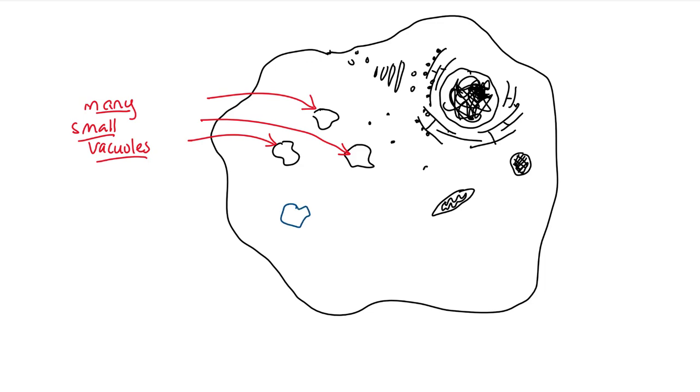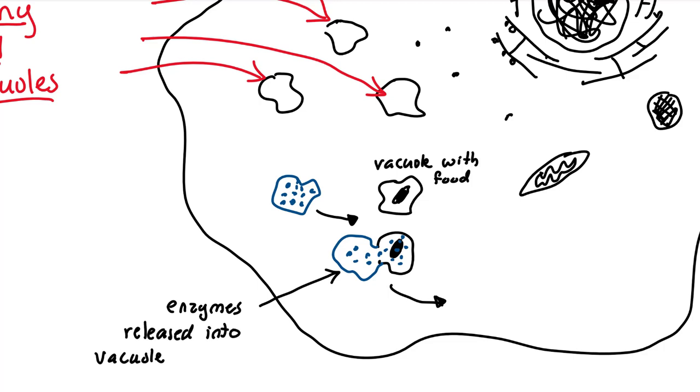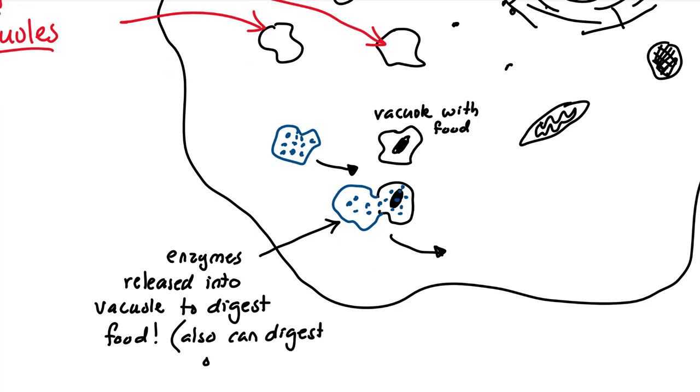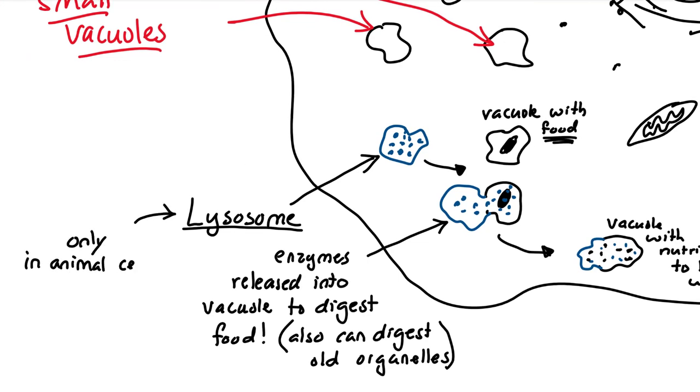Animal cells, besides being round and having small vacuoles, they have this organelle that will go up to a small vacuole with food and it will combine with it. And it can because all membranes are made of phospholipids. And it will unleash digestive enzymes or hydrolytic enzymes into that vacuole to break down the food into nutrients. It's kind of like the stomach of the cell. Now this is only found in animal cells because they have to eat stuff. And if you eat stuff, it has to get broken down. And now you have a vacuole with nutrients. So, in summary, this is a lysosome. It contains digestive enzymes only in animal cells because animal cells, as we said, are heterotrophic. They eat stuff.